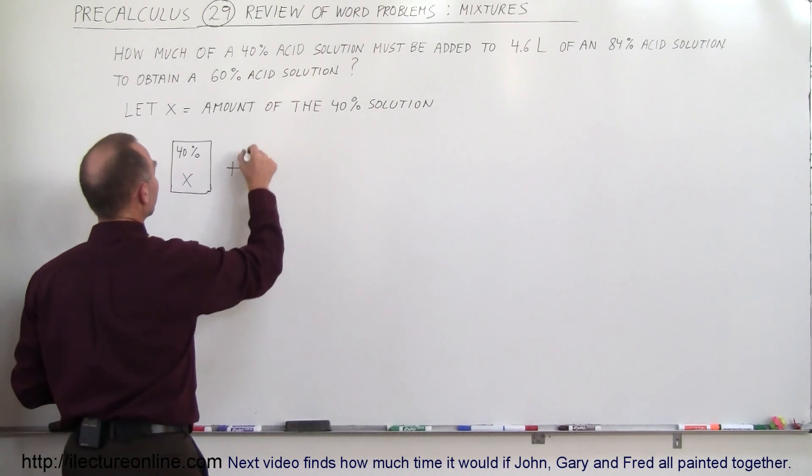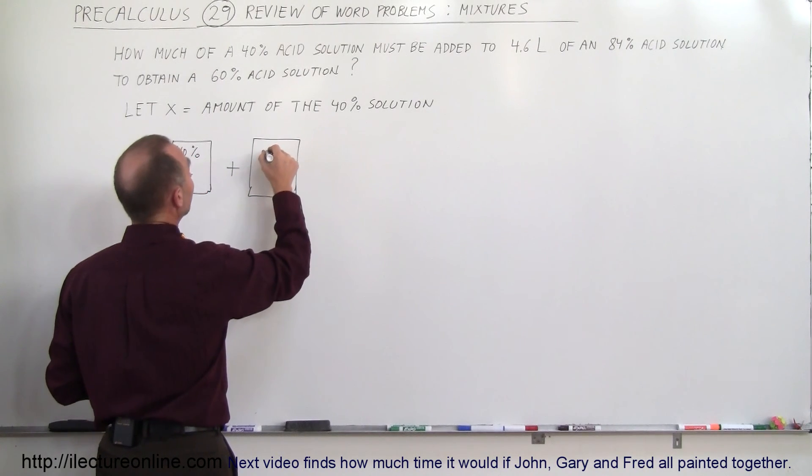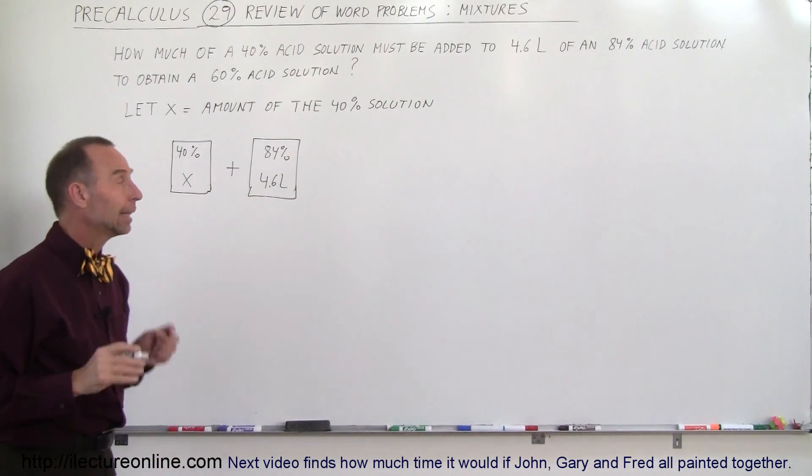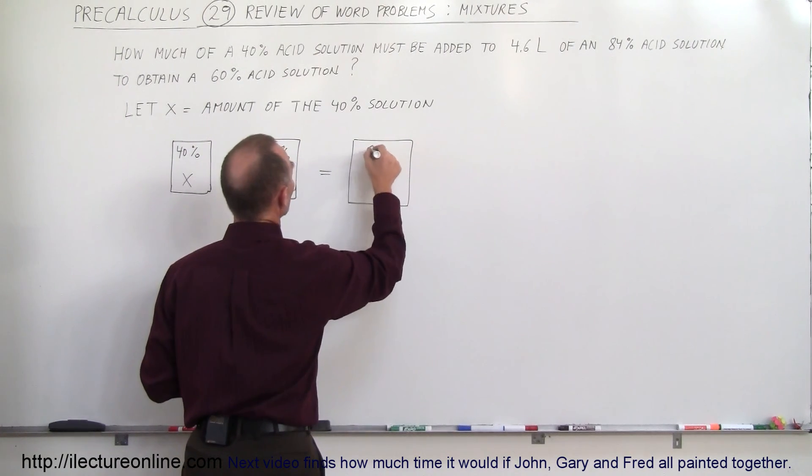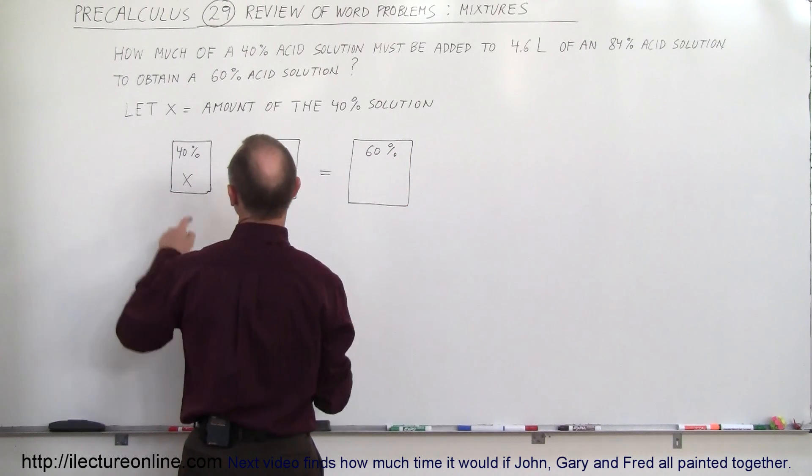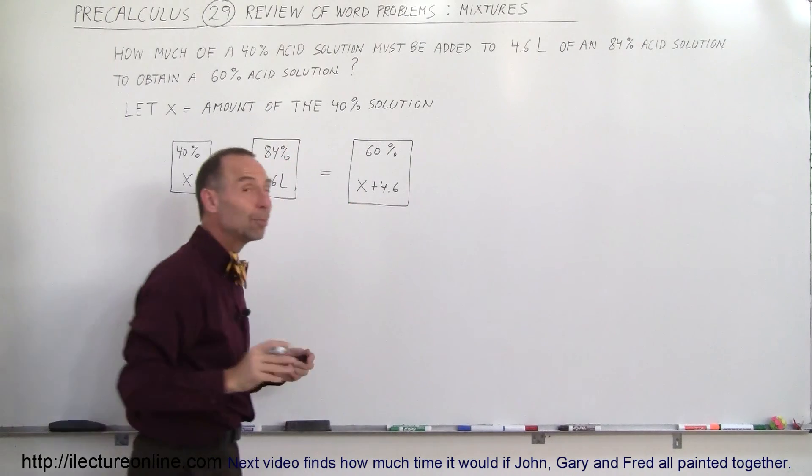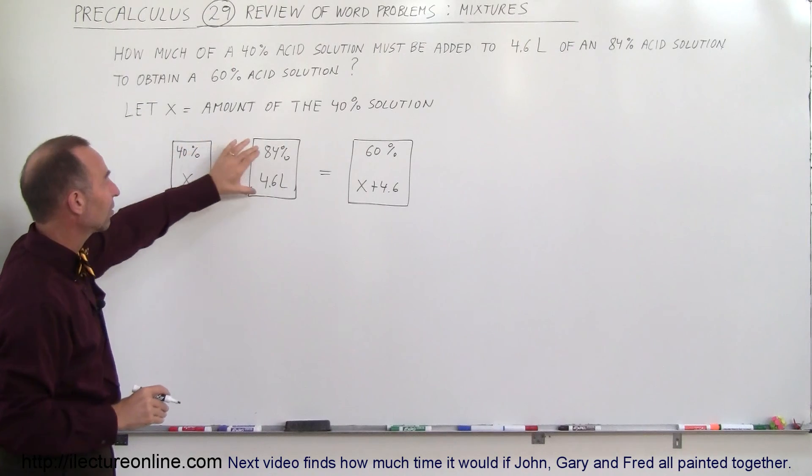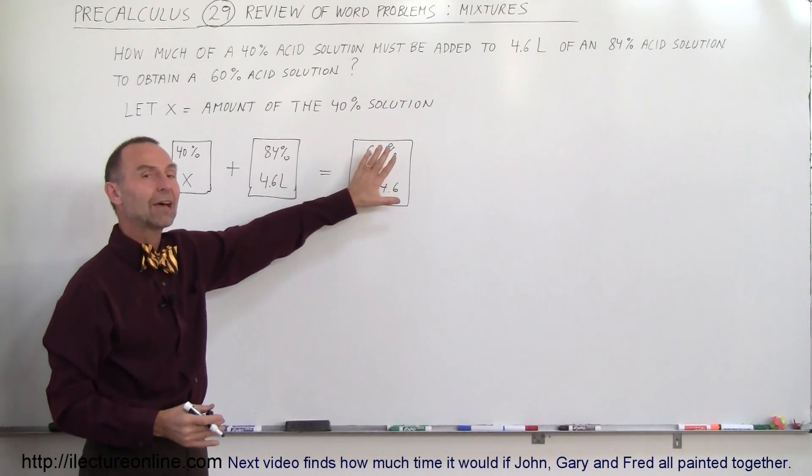We're going to add that to a known quantity of 84% solution. So we have 84% solution and we have 4.6 liters of that. And then when we add that together, we end up with a 60% solution and the amount that we'll have will be X plus 4.6. Now what this is keeping track of is how much acid was in this solution plus how much acid is in this solution and the two combined should equal the total amount of acid we have in the final solution.